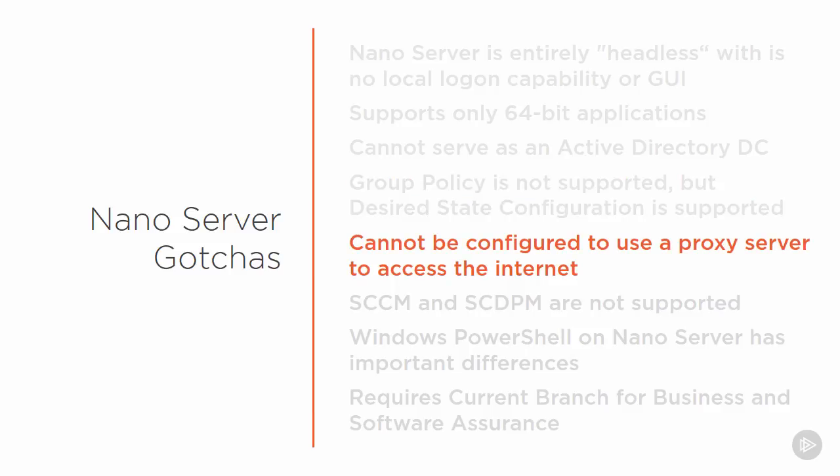Your NanoServer cannot be configured to use a proxy server to access the internet, which can be an issue if you have the need to reach out onto the internet to grab different packages to download onto the NanoServer itself. So be prepared for that if you need to reach remote locations to grab packages from PowerShell repositories.